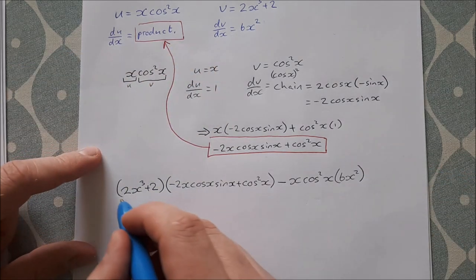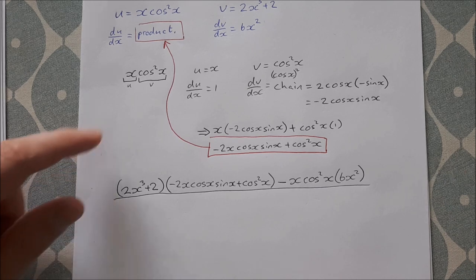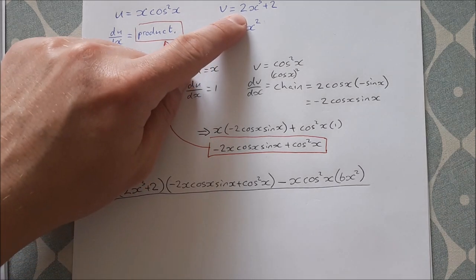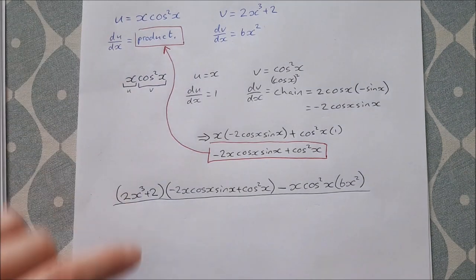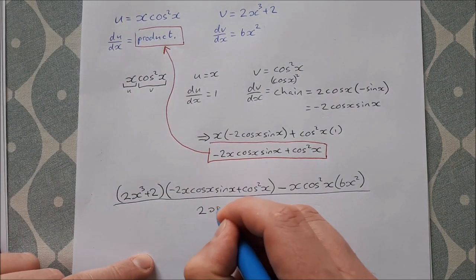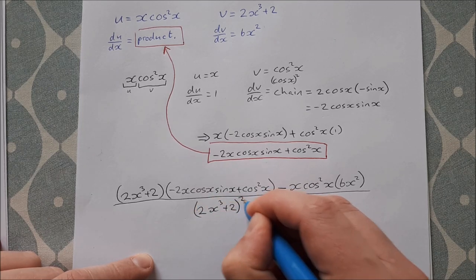So minus u, which is x cos²x, times dv/dx, which is 6x². I'll have a little bit of tidying up to do on this top line in a moment. And this is all over v², well v is this here: 2x³ + 2, so that's over (2x³ + 2)².